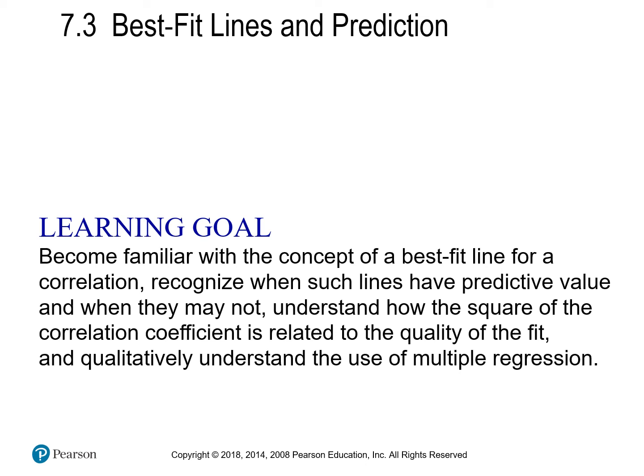Hello everybody. I hope you're doing well wherever you are. So 7.3 is about lines of best fit and prediction. We've talked about this a little bit in the past, so we're gonna get a little more in the weeds here. We're gonna become familiar with the idea of best fit lines for correlation, recognize when such lines have predictive value and when they may not, understand how the square of the correlation coefficient is related to the quality of fit, and qualitatively understand the use of multiple regression.